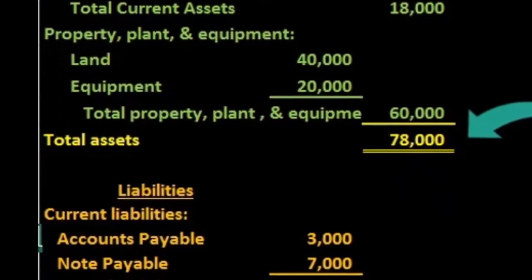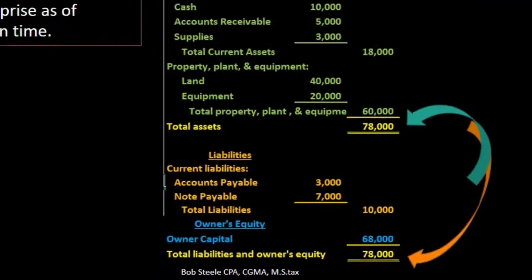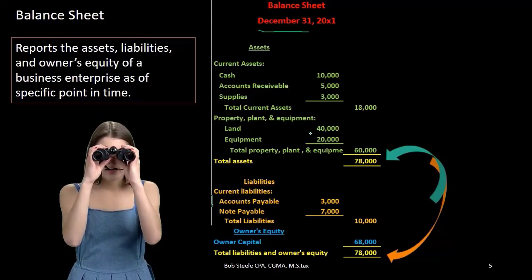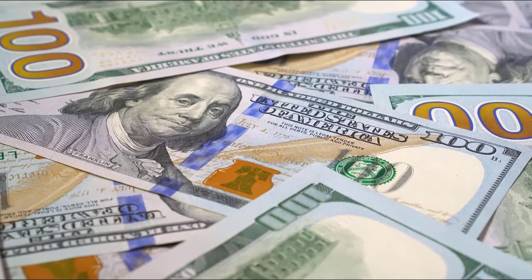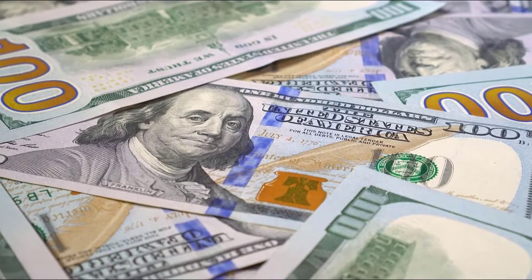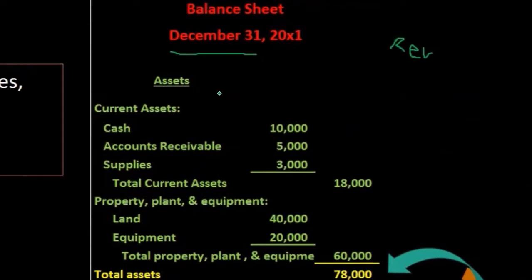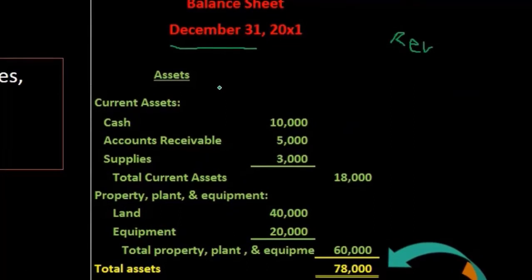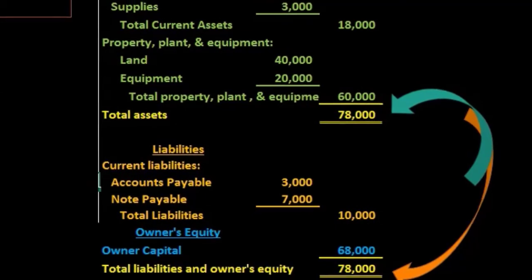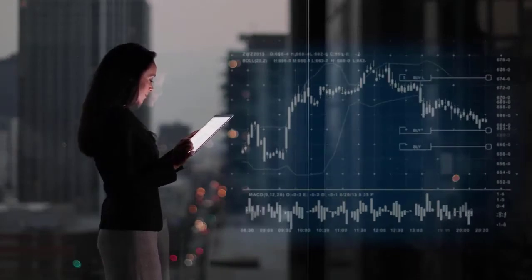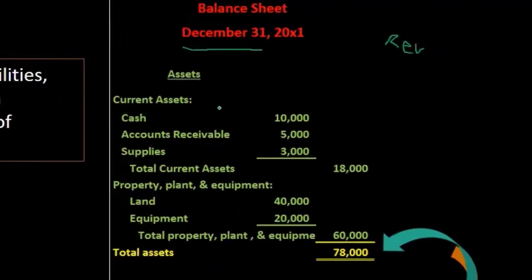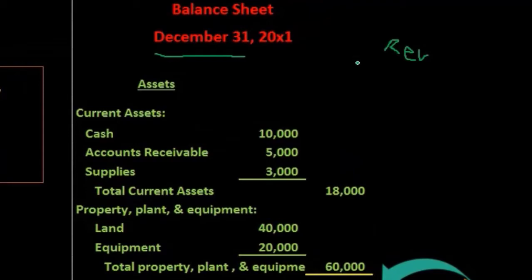When considering assets, liabilities, and equity, it is important to keep the end goal in mind — to generate revenue. Revenue is the goal of the business and the major measurement used to see whether goals are being achieved. Assets are there to help us generate revenue in the future. We have assets because they are going to be consumed at some point in time to help generate revenue.